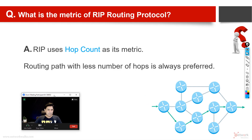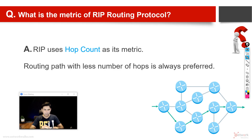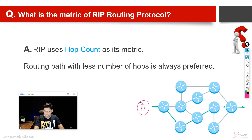Another question is: what is the metric of RIP routing protocol? RIP uses hop count as its metric. It keeps on increasing the hops one by one, and the routing path with the lesser number of hops is always preferred. For example, let's say A wants to send some data to destination B, and there are multiple paths available.